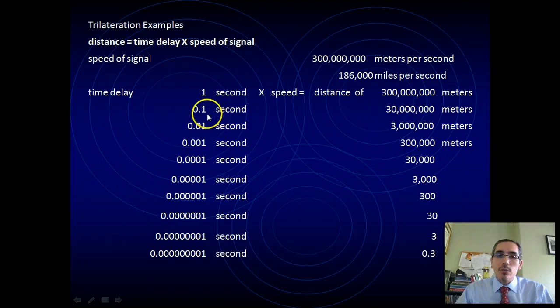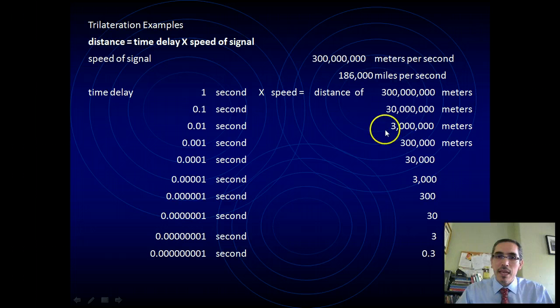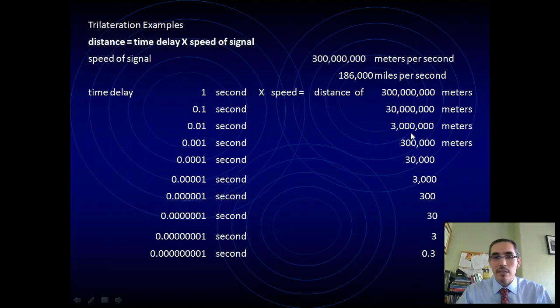Now, if you could get it down to a tenth of a second, that means you would only be 30 million meters away. If you got it down to a hundredth of a second, it would be 3 million meters away. If you keep reducing the fractional amount of time with which you can measure it, you can shrink the distance that we're talking about.